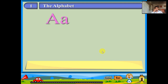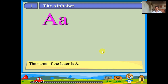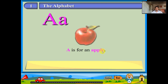The first letter is A. The name of the letter is A. Now say the sound of the letter: air. A is for an apple. A has many other sounds. We will learn them later.